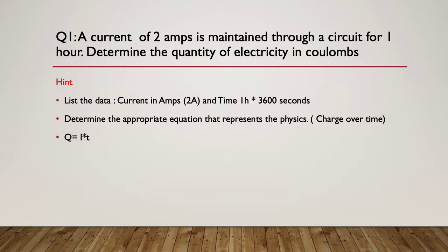So now continuing, our hint is list the data that you have available. We know we have a current of two amps and a time of one hour which is 3600 seconds. Remember we work in SI units. So determine the appropriate equation that actually represents the physics, that is charge of electricity over time, and that formula is Q equals I times T.